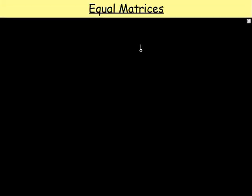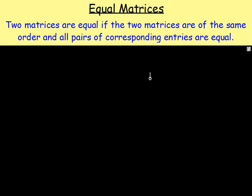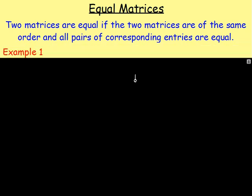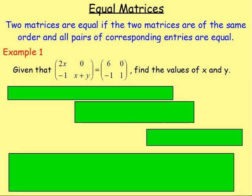Equal matrices. Two matrices are equal if the two matrices are of the same order — they have to be of the same order — and all the corresponding entries are equal. So for example, given that this matrix with 2x, 0, negative 1 and x plus y equals this matrix with 6, 0, negative 1, 1, find the values of x and y. Anybody have any ideas? You could equate some of the entries.